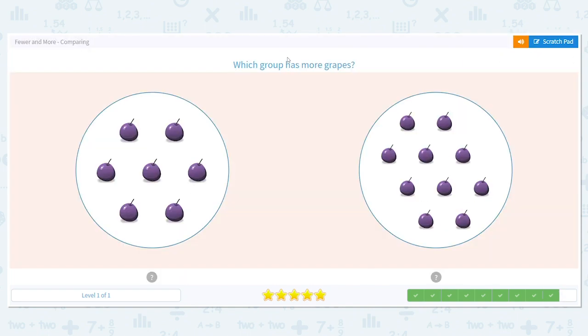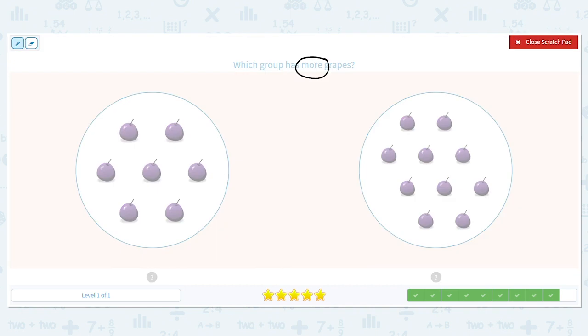All right, let's try one more. Which group has more grapes? I think for this last one, it's a safe idea to count each group to be sure. Okay, so I will cross off as you count out loud. Go ahead. How many grapes did you get on that side? Seven. Good job.